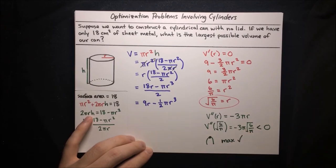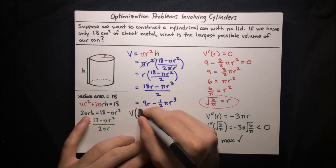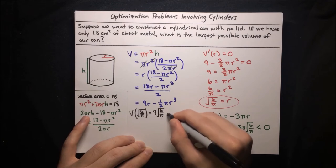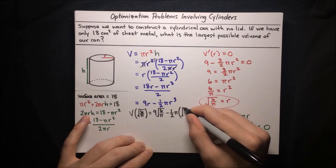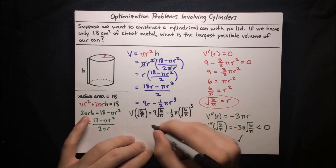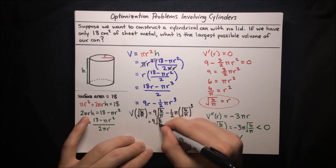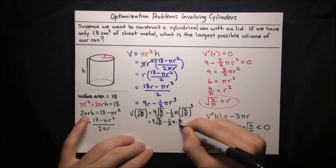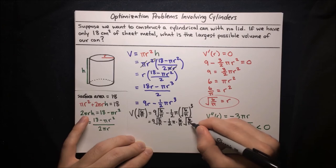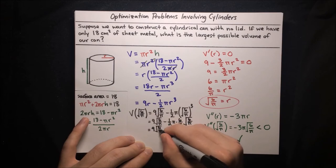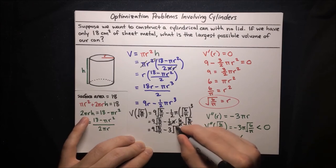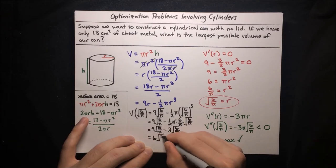We've found the value of r that yields a maximum. Now we evaluate the volume function at r equals the square root of 6 over pi: V equals 9 times the square root of 6 over pi minus one-half pi times (square root of 6 over pi) cubed. Simplifying: the pi's cancel in the second term, and 6 over 2 is 3, giving 9 root(6/pi) minus 3 root(6/pi), which equals 6 times the square root of 6 over pi.